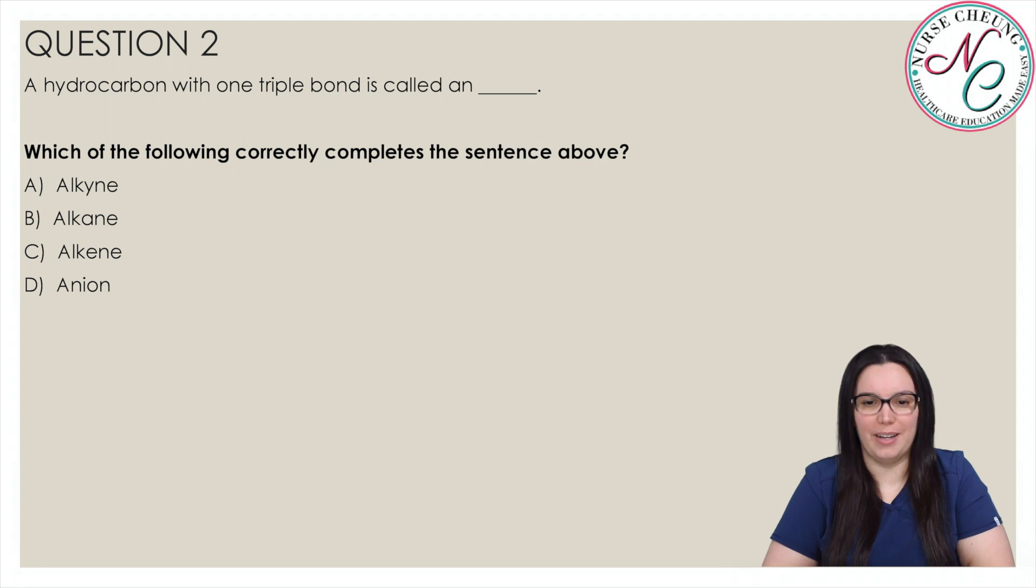A hydrocarbon with one triple bond is called a blank. Which of the following correctly completes the sentence above? Is it A alkyne, B alkane, C alkene, or D anion? And the correct answer is A alkyne. An alkane has a single bond, an alkene has a double bond, alkynes are characterized by their triple bonds, and an anion refers to the negatively charged end of an ionic bond.